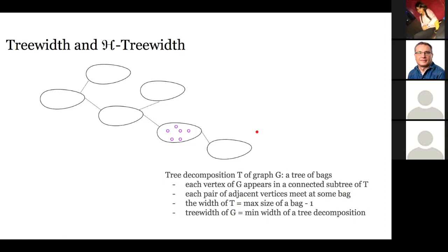Now let's recall tree decompositions. A tree decomposition is a tree of bags where each vertex appears in a set of bags inducing a connected subtree, each pair of adjacent vertices must meet at some bag, and the width is the maximum bag size minus one. Tree width is the minimal width over all tree decompositions. I would like to extend this definition to treat subgraphs belonging to class H as easy.